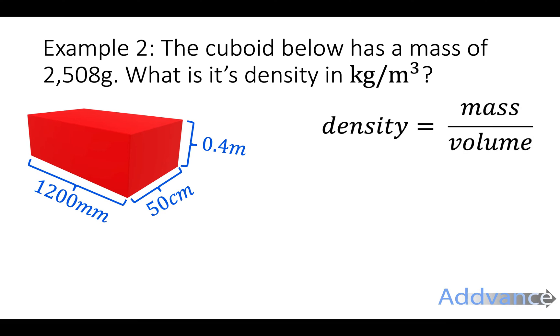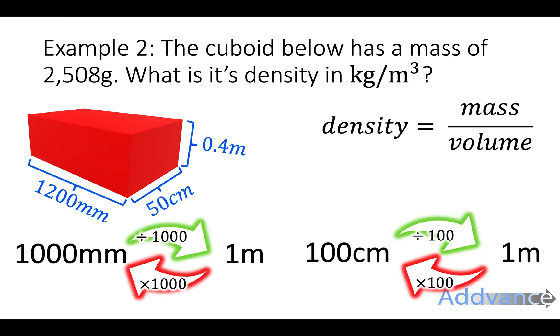So, example two, the cuboid below has a mass of 2508 grams. What is its density in kilograms per meters cubed? Well, density is given by mass divided by volume. So that is an equation you need to remember for maths and physics.